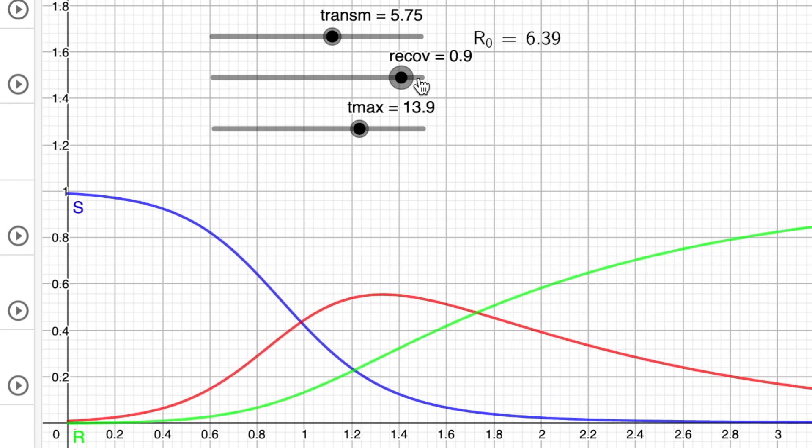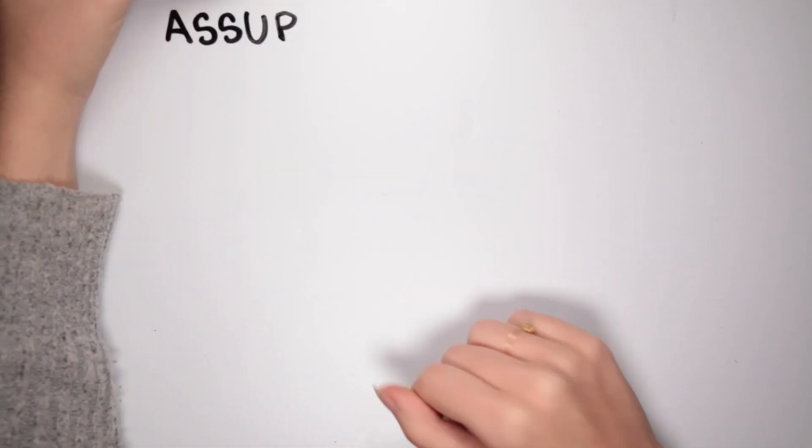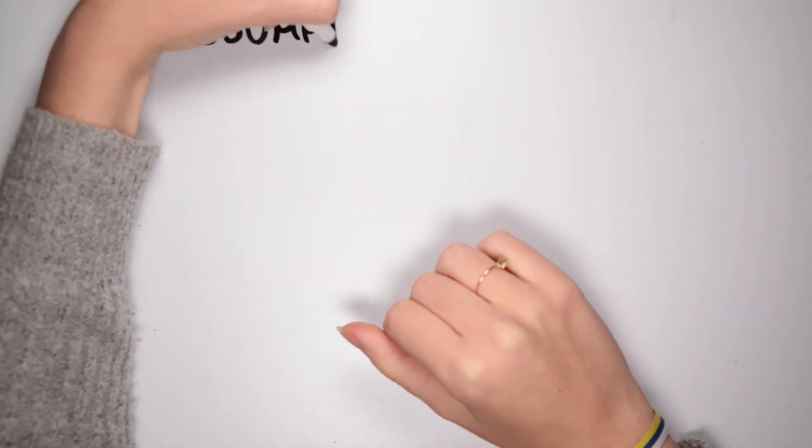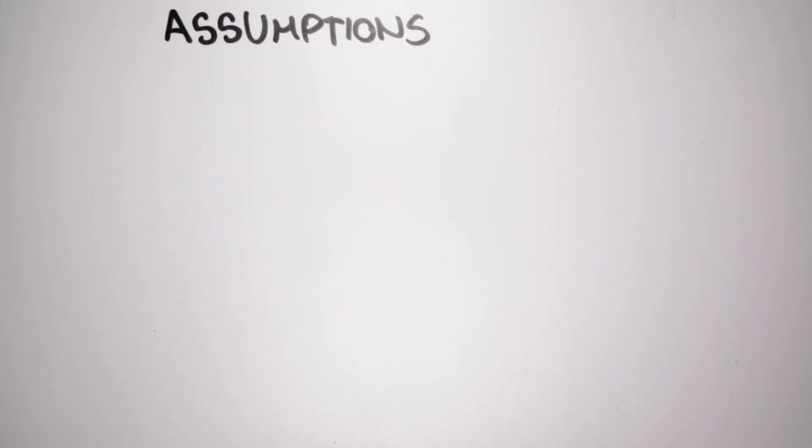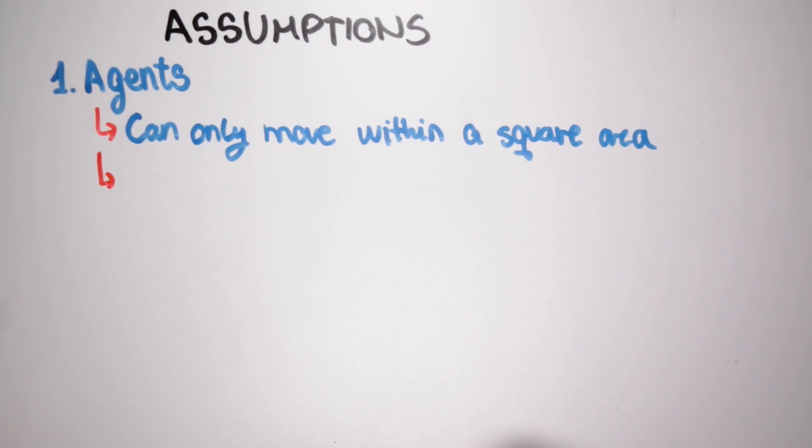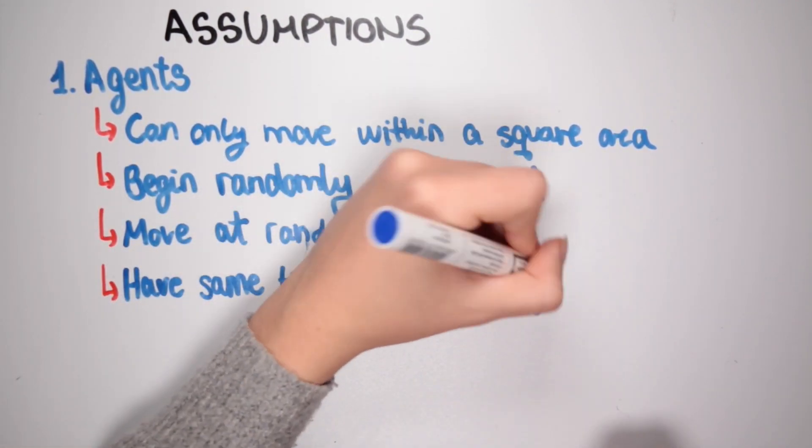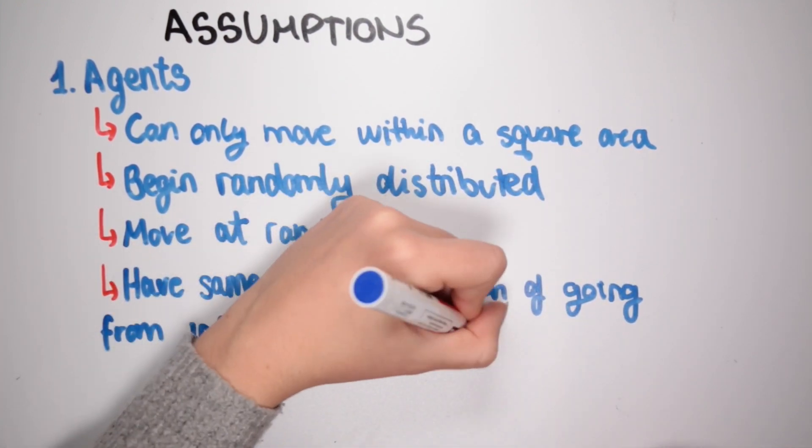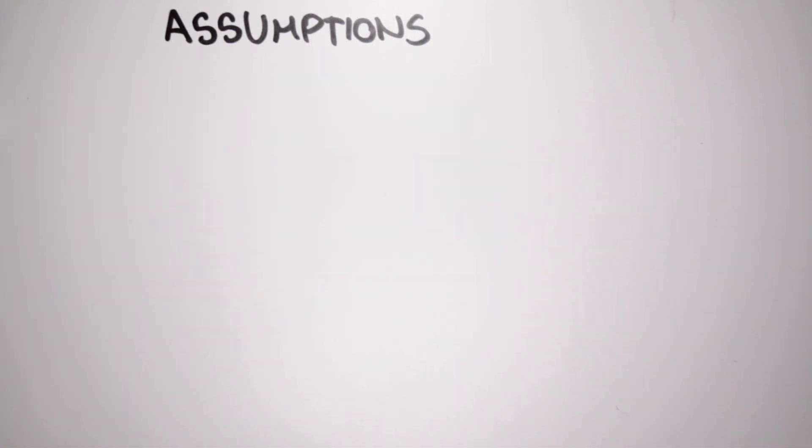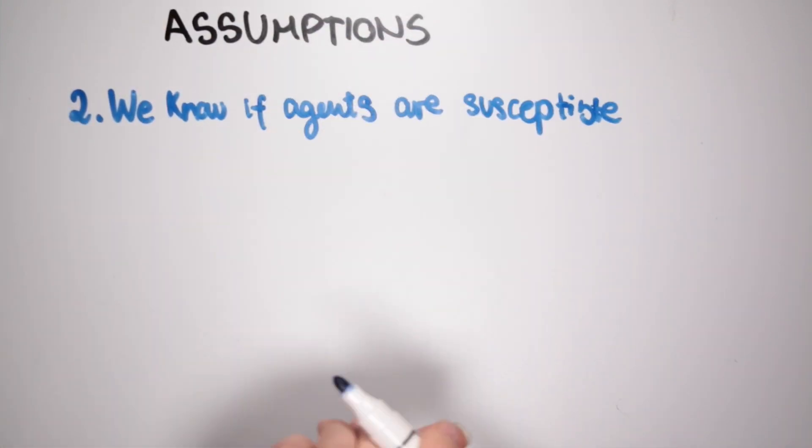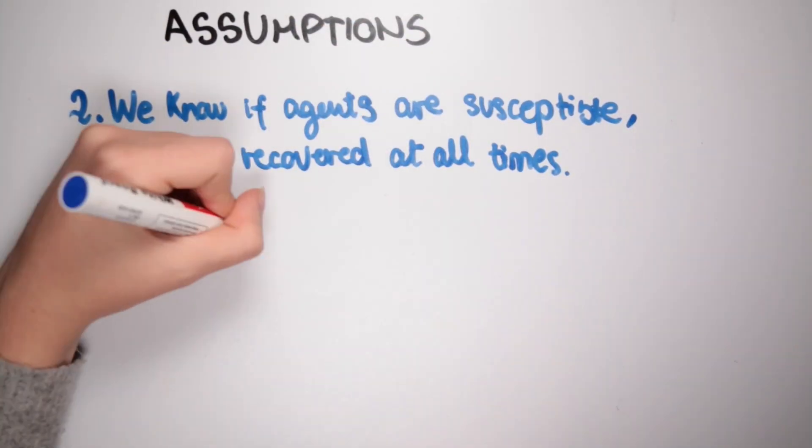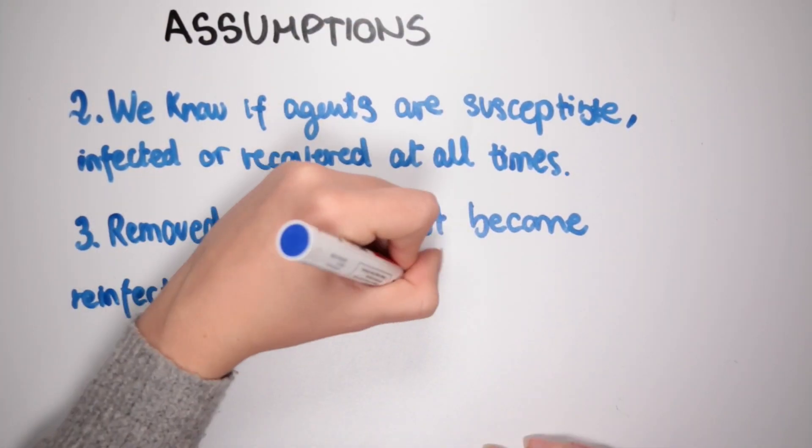Despite being a popular tool to model disease spreads, the SIR model makes several assumptions. First of all, the agents can only move within a square area. They begin randomly distributed. They move at random and they have the same time distribution of going from infected to removed. Secondly, we know if agents are susceptible, infected, or recovered at all times. And lastly, removed agents cannot become reinfected nor spread infection.